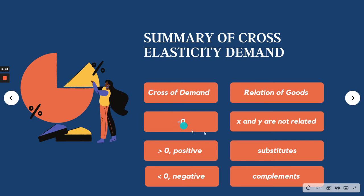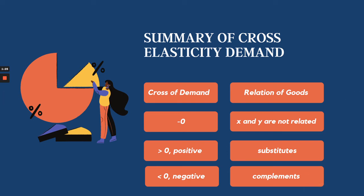If the cross price elasticity equals zero, then products X and Y are not related at all. If it is greater than zero — a positive number — they are called substitutes. For example, water and juice, or water and cola — those are substitute products.